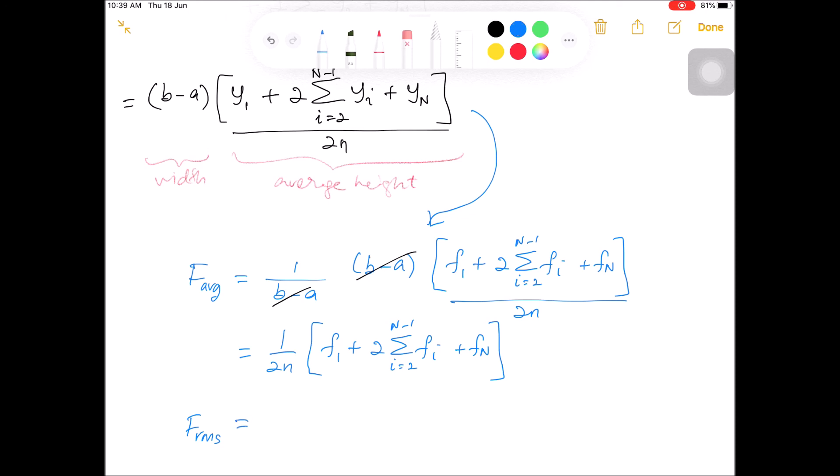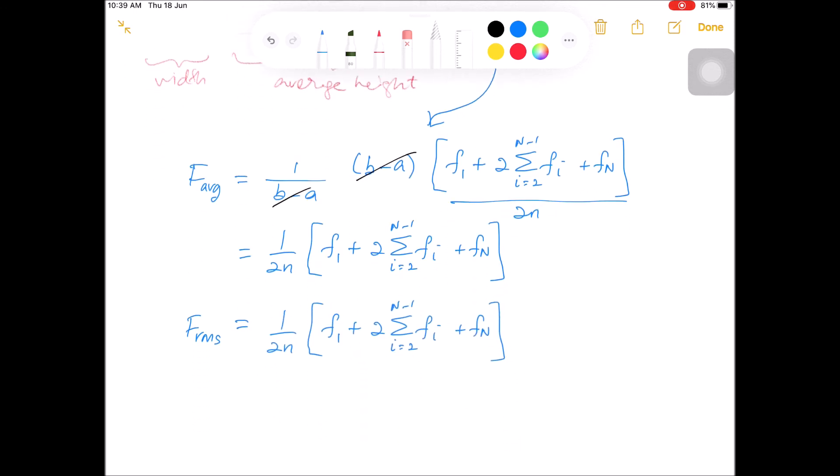So similarly we can show that the expression for the RMS value equals to this expression, having the square on the magnitude of F and the square roots for the whole expression.